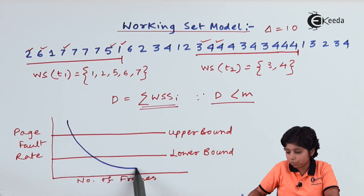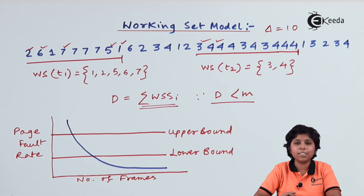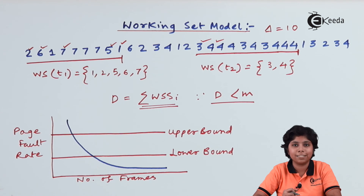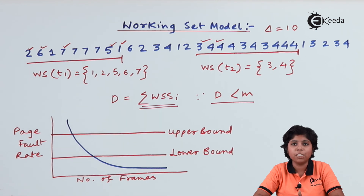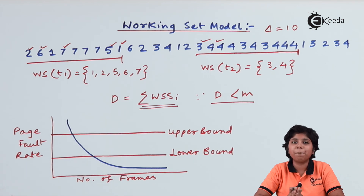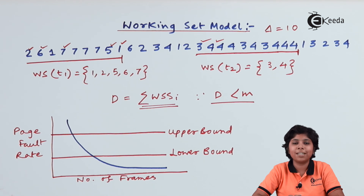When the page fault rate gets lower, we free one frame from that process to allocate to another. The higher the page fault rate, the more frames we add; the lower the rate, the fewer frames we allocate. Page fault frequency gives an accurate measure of the page fault rate and can prevent thrashing. Along with working set models, we can also swap out some processes if no free frames are available. This direct approach, using upper and lower bounds on the threshold rate, is how page fault frequency helps prevent thrashing. Thank you for watching — stay tuned with Ikida and subscribe.